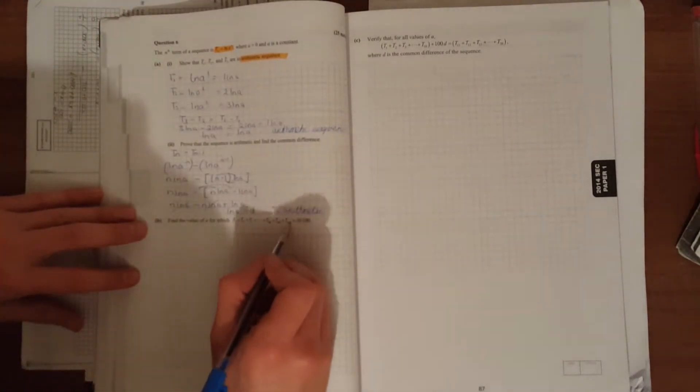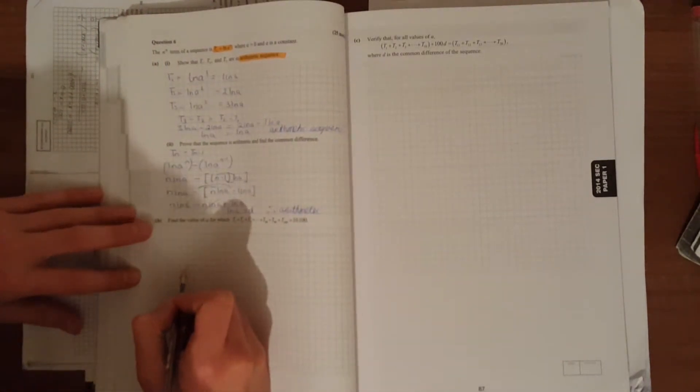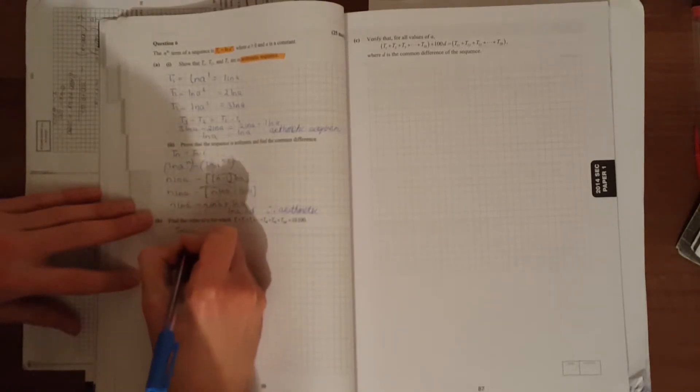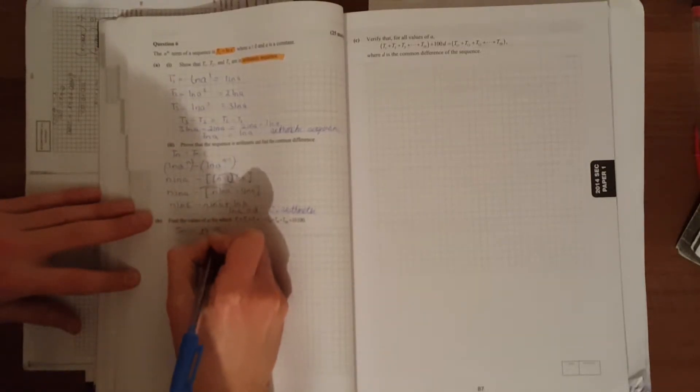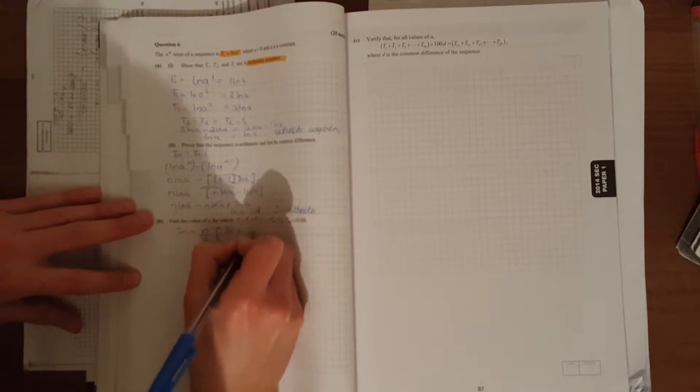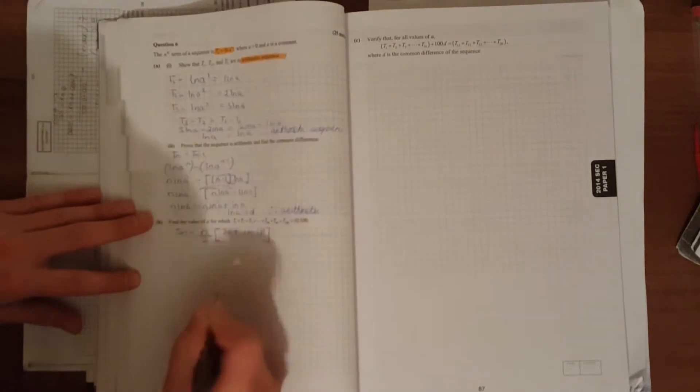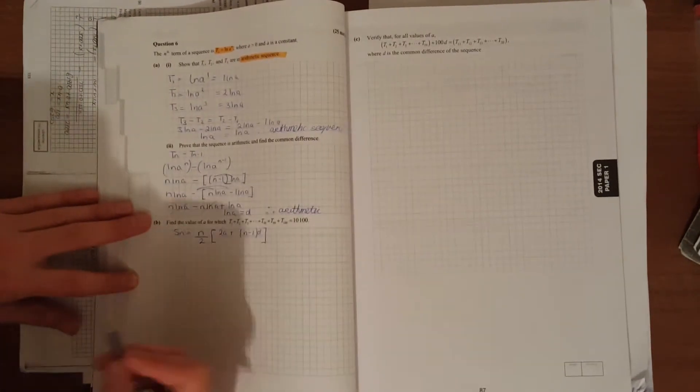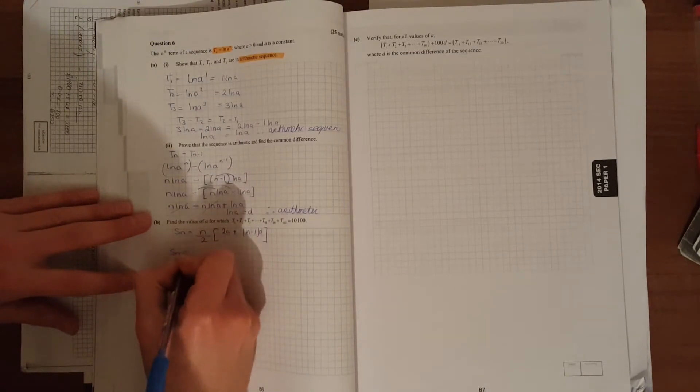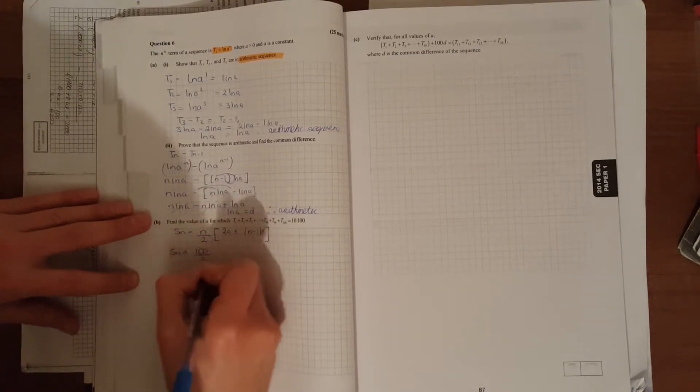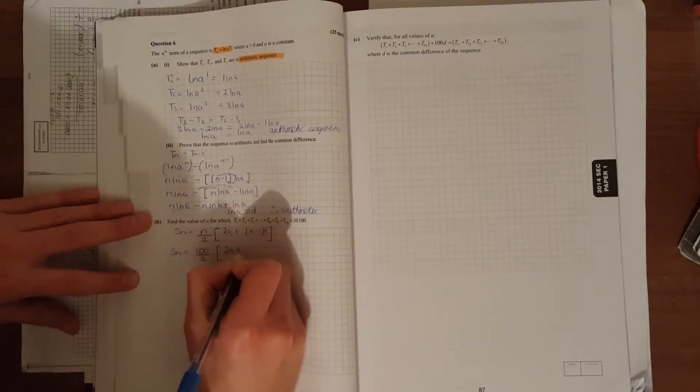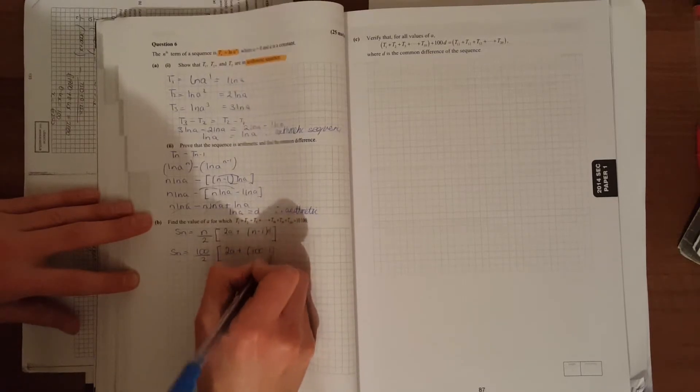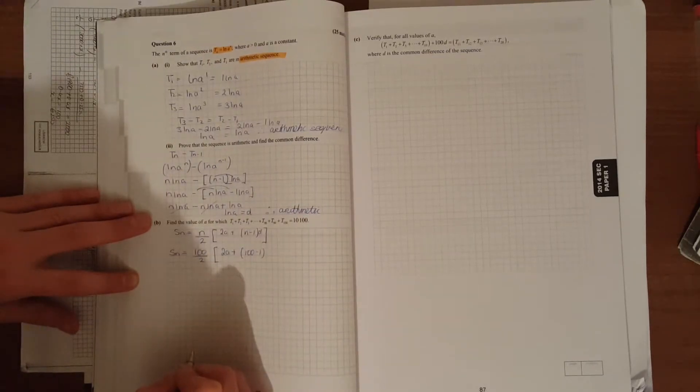Find the value of a for which the first 100 terms equals 10,100. So we're working out Sn. We have 100 terms. The common difference is ln(a).